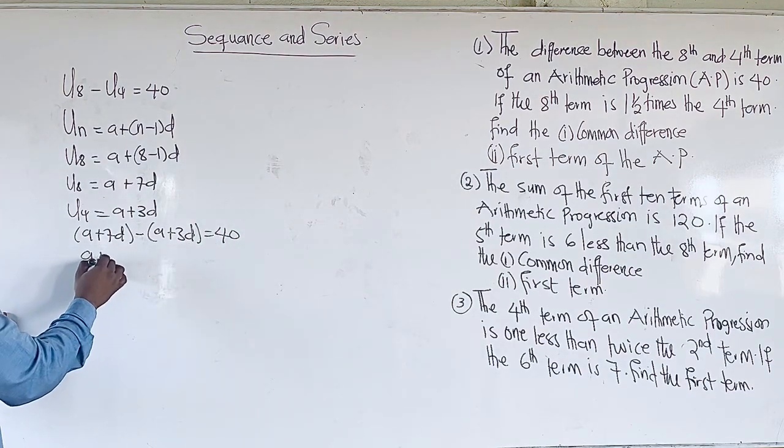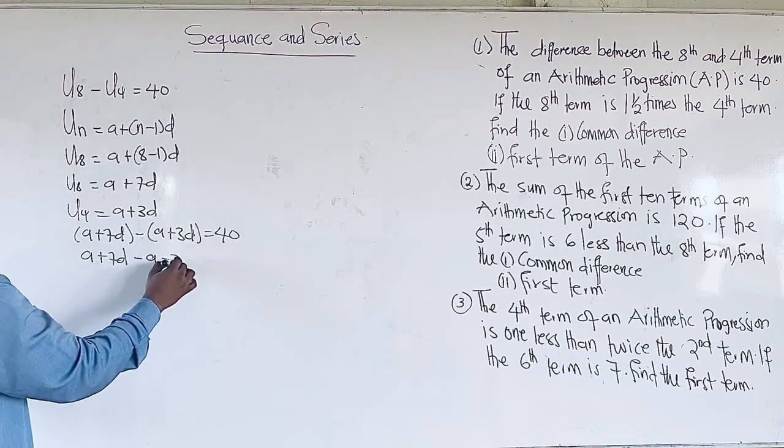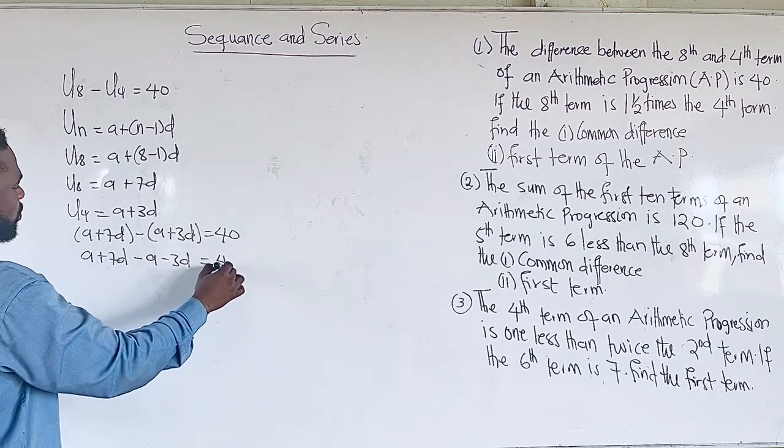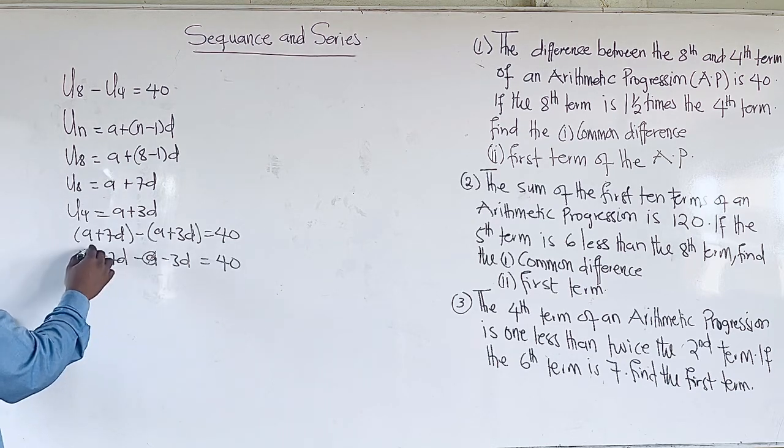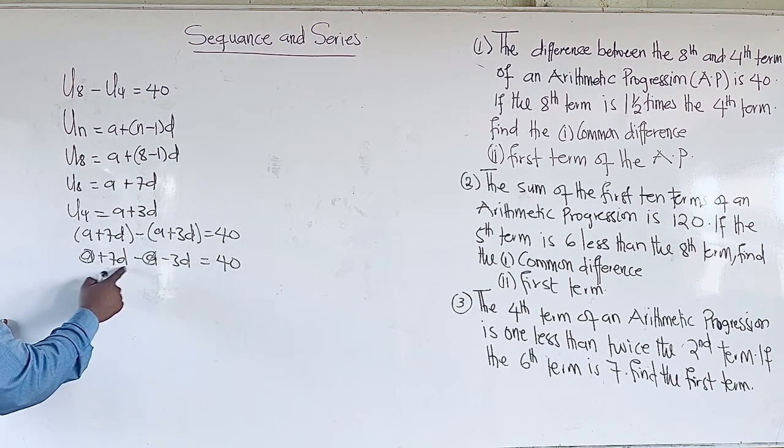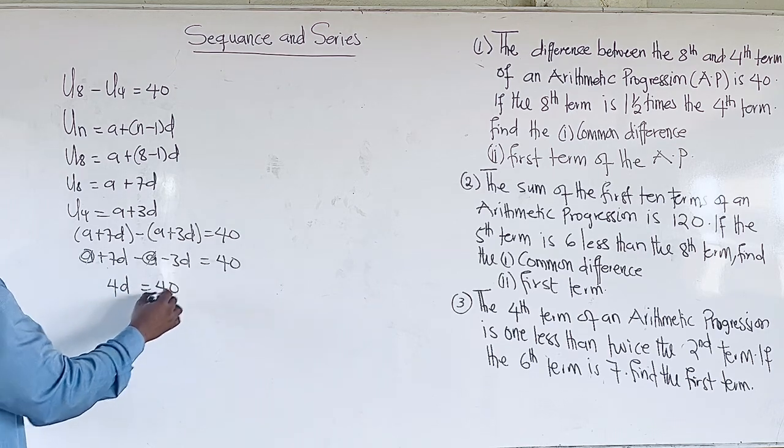Then we can simplify this as A + 7D - A - 3D = 40. And A minus A will give us 0.